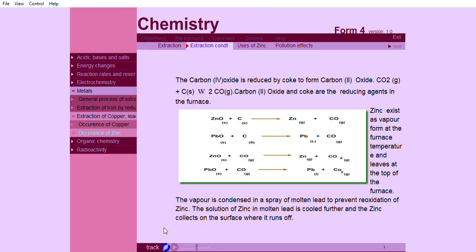Zinc exists as vapor form at the furnace temperature and leaves at the top of the furnace. The vapor is condensed in a spray of molten lead to prevent reoxidation of zinc. The solution of zinc in molten lead is cooled further, and the zinc collects on the surface from where it is run off.